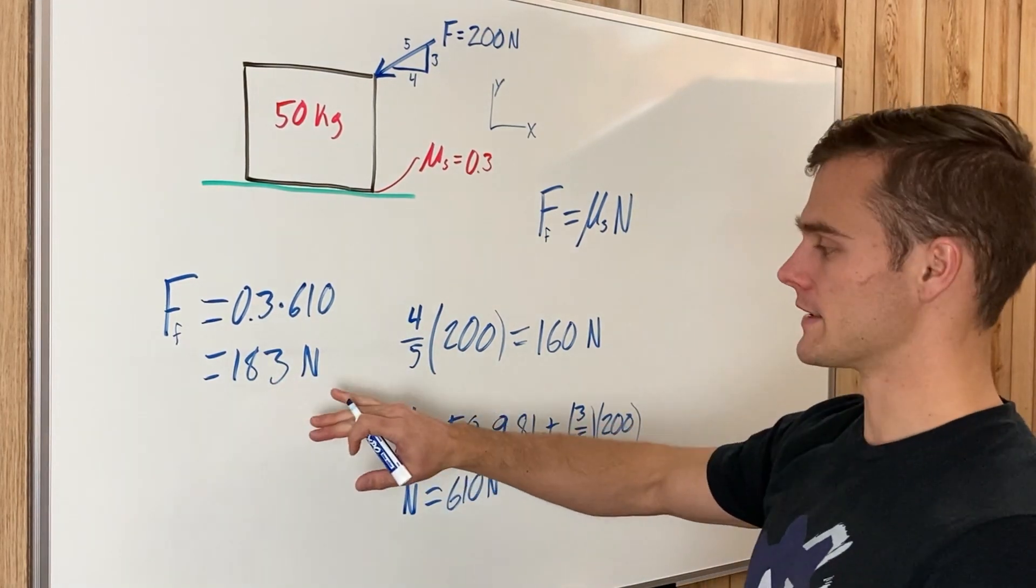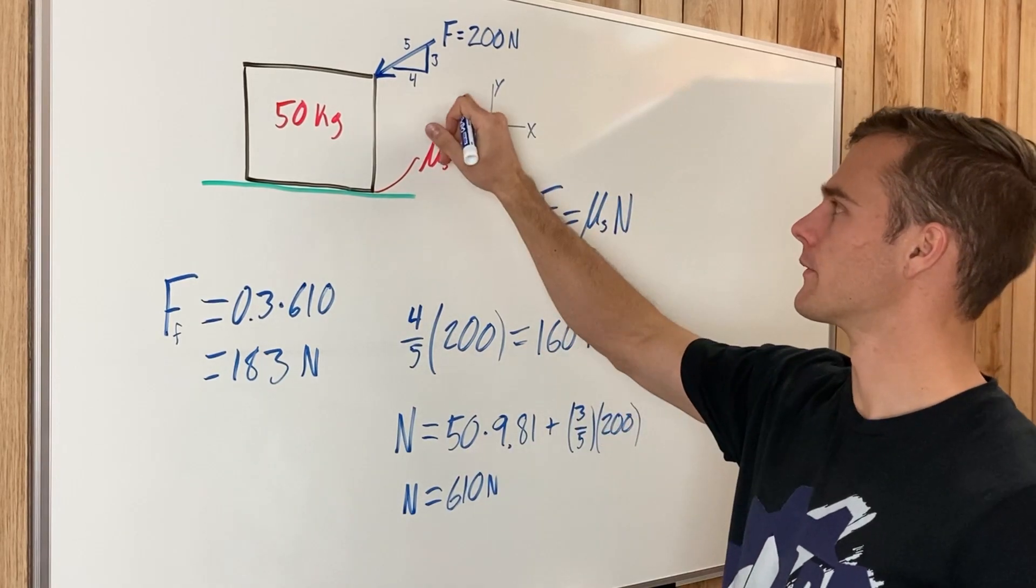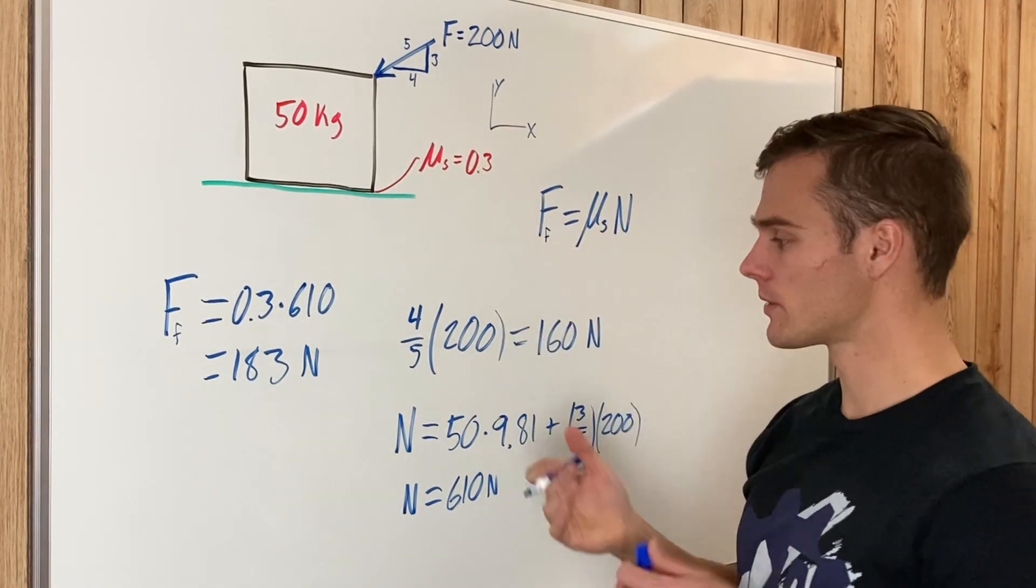So this maximum friction force is greater than this horizontal component of the force that's pushing on the box, so we know it's not going to move.